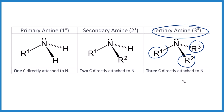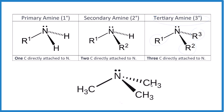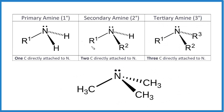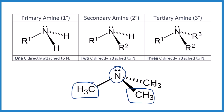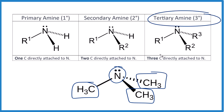Let's practice some. Pause and identify whether this is a primary, secondary, or tertiary amine. So here's our central nitrogen with the lone pair. We have one carbon group, two carbon groups, three carbon groups — that's going to be tertiary.